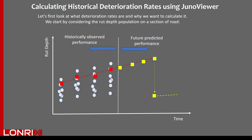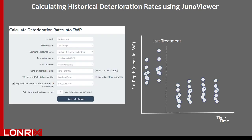So let's see how JunoViewer does this. On the left, you can see the screen used by JunoViewer to calculate deterioration rate. Initially, we specify which network we want to use and the version of the ForwardWorks program. We also instruct JunoViewer to combine any rut depth measurements taken closer than 30 days apart into a single survey, such as that shown by this population of points here.